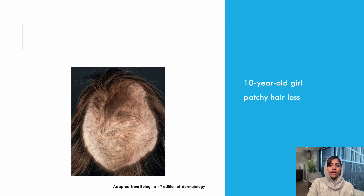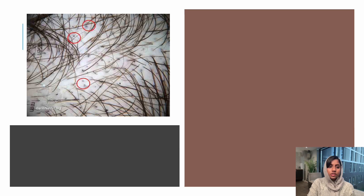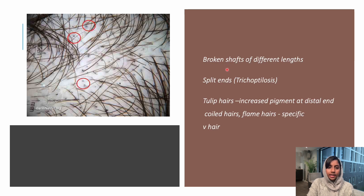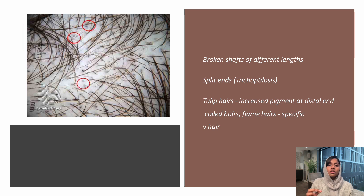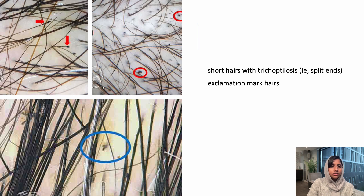The next scenario: a 10-year-old girl is brought with complaints of patchy hair loss. On trichoscopy, you can see black dots, broken hairs of varying length, and also V-shaped hairs. This is a typical feature of trichotillomania. There can be broken shafts of different lengths, split ends (also known as trichoptilosis), tulip hairs — hairs with increased pigmentation at the distal end — as well as coiled hairs and flame hairs, which represent broken proximal parts of hairs. V-shaped hairs indicate two hairs pulled off from a single hair follicle.